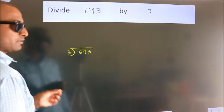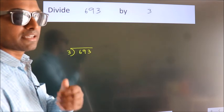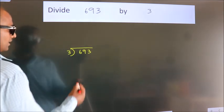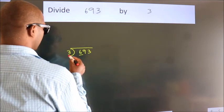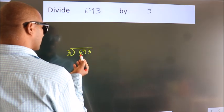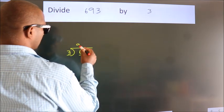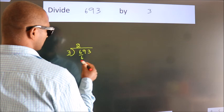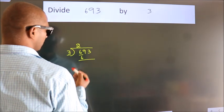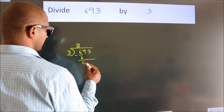This is your step 1. Next. Here we have 6, here 3. When do we get 6? In 3 table. 3 twos, 6. Now, we should subtract. We get 0.